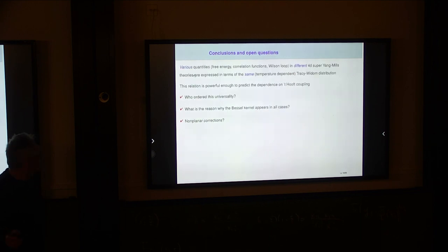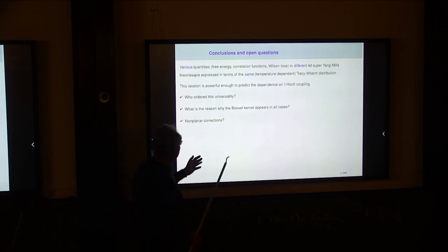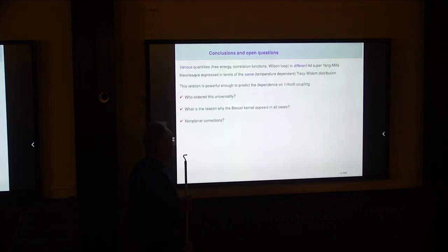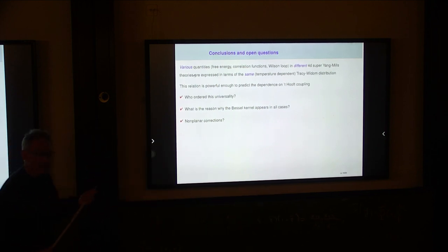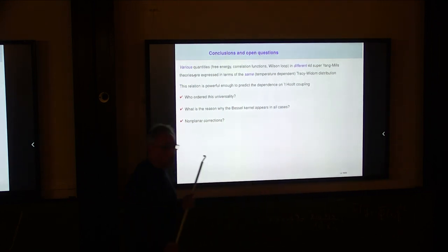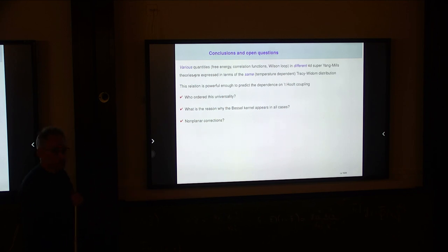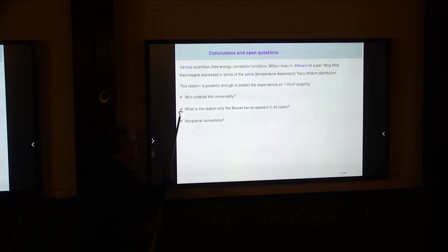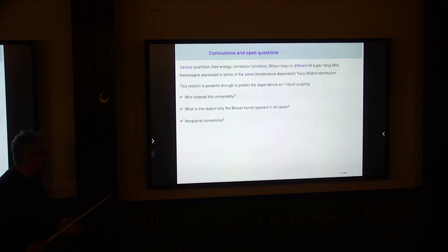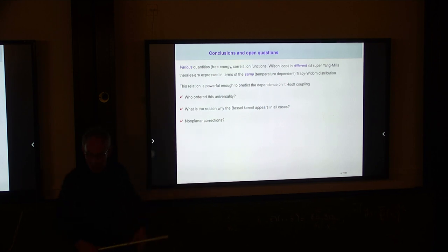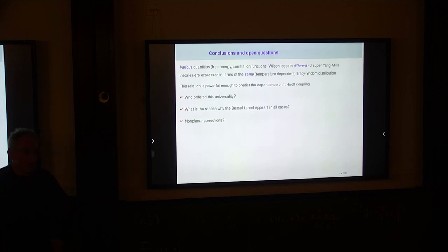In conclusion: I have tried to show that different gauge theories — N=2 and N=4 — with various quantities such as free energy, correlation functions, and Wilson loops, all yield observables expressible in terms of the same universal object: the Tracy-Widom distribution (Fredholm determinant of the Bessel kernel) with an appropriately chosen symbol chi. Why the Bessel kernel appears universally across all these problems — and not other integrable kernels — is something we do not fully understand. A further open question is whether this same universality persists when systematic 1/N corrections are included.